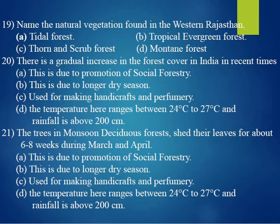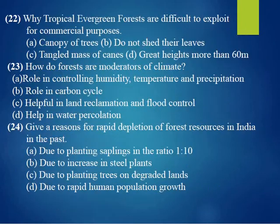Twenty-first question: the trees in the monsoon deciduous forest shed their leaves for about 6 to 8 weeks during the months of March to April. The answer is B — this is due to the longer dry season, which causes them to shed their leaves. Twenty-second question: why are tropical evergreen forests difficult to exploit for commercial purposes? The answer is C, due to tangled masses of canes and other vegetation.